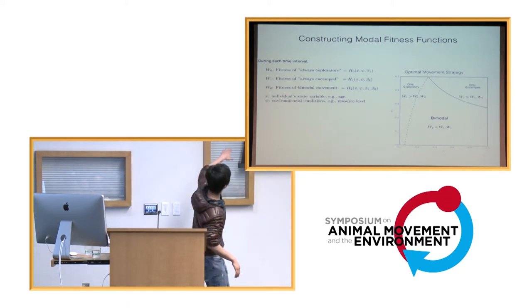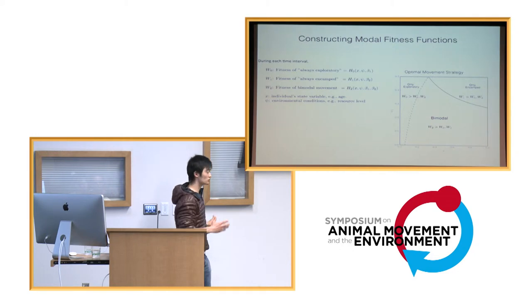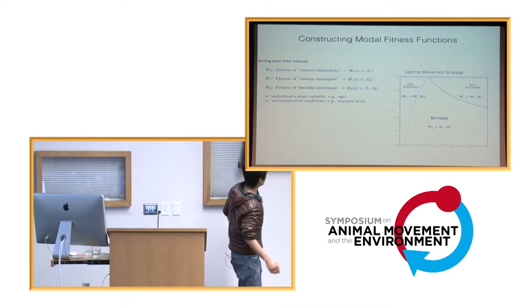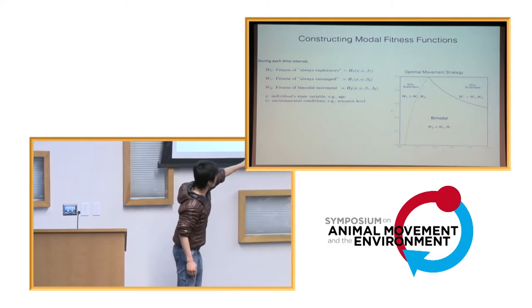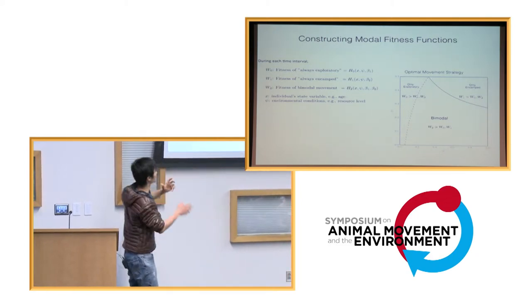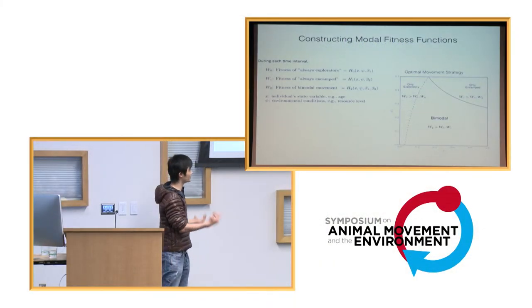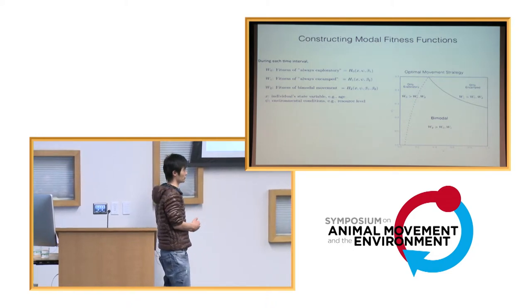So, x here, the state variables in our model specifically, we use age. And we link that to a certain movement behavior an individual is capable of performing. The figure here basically summarizes the result of doing some kind of optimization based on the three strategies above. Two of the strategies are basically always to perform either exploratory or encamped mode during a period of time. And the third strategy is more dynamic. The individual is able to switch between the two depending on environmental conditions, as well as its own state variable at the time.